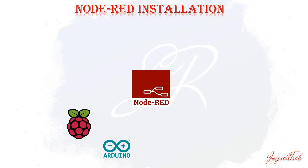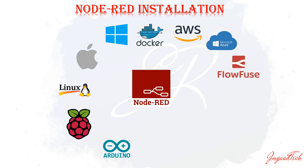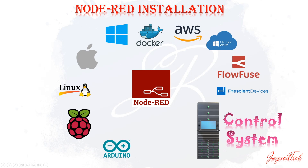Node-RED can be installed on any OS — it is OS-agnostic. It works on Arduino, Raspberry Pi, Linux, Mac, Windows, even Docker containerization and clouds. We can also use FlowFuse to deploy it at scale across many devices.